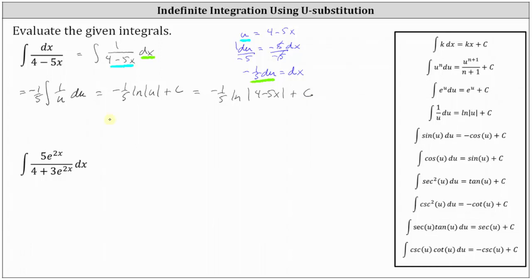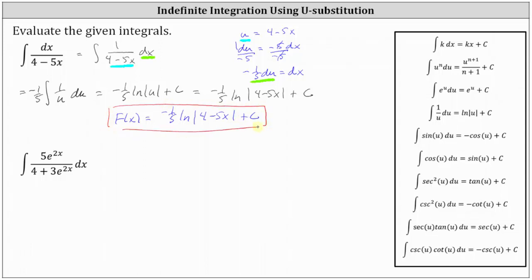We normally use a capital letter to identify the antiderivative. In this case, we will say F(x) equals negative 1/5 times the natural log of the absolute value of 4 minus 5x plus C. This is the family of functions whose derivative is equal to the given integral function.